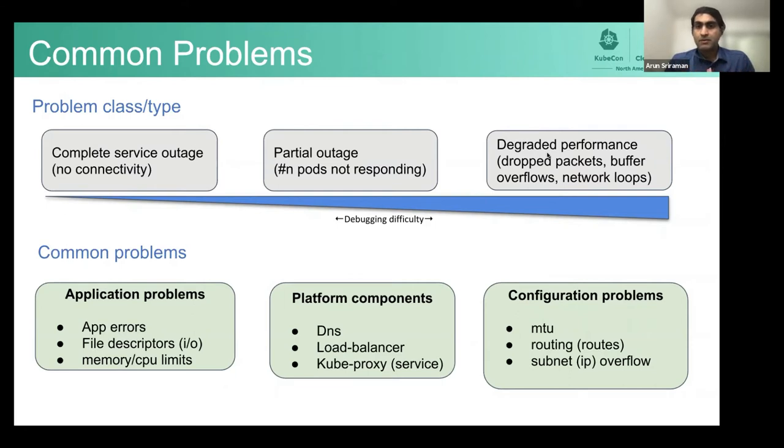There could be a configuration problem, which is the third type or third bucket, which is very common. And in my experience, there is a problem in MTU settings somewhere across from your source to your destination that's causing an issue, or there are routing issues, or there is an IP overflow, just simply that your pod is not able to get an IP address and it just fails coming up.